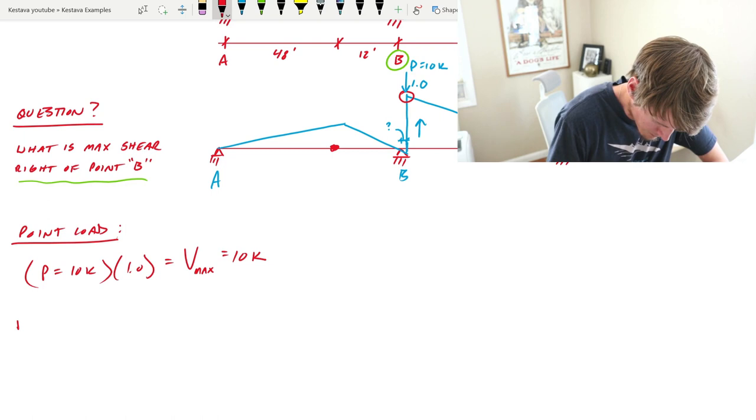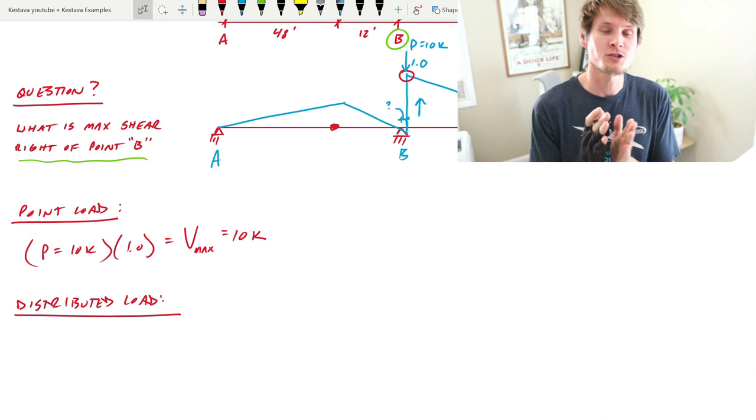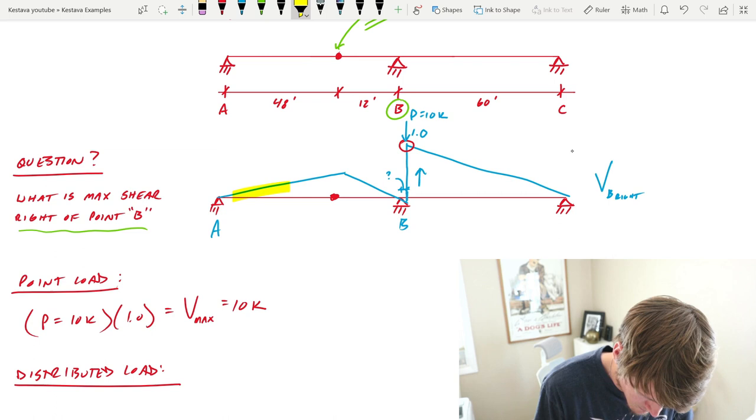What about the distributed load? The maximum shear at the point of interest is greatest when the distributed load is applied and multiplied by summing all areas under the curve.